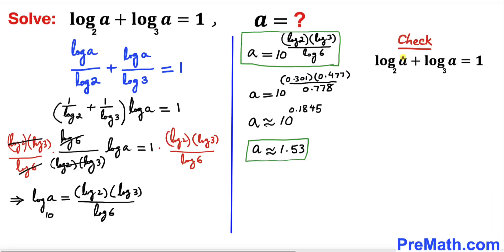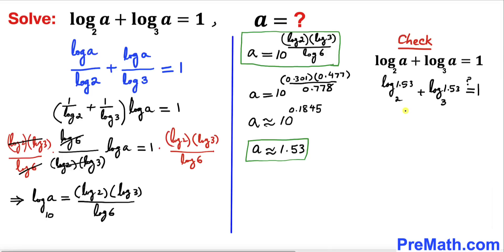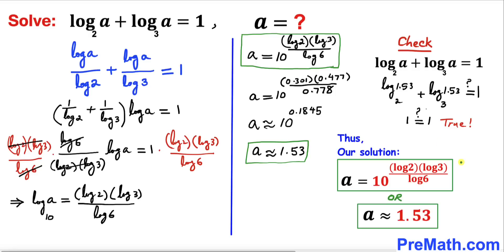Let's verify by plugging a ≈ 1.53 back into the original equation. The left-hand side becomes log of 1.53 with base 2 plus log of 1.53 with base 3. Using a scientific calculator, the left-hand side is indeed equal to 1, confirming our answer. Therefore a ≈ 1.53 is our valid solution.